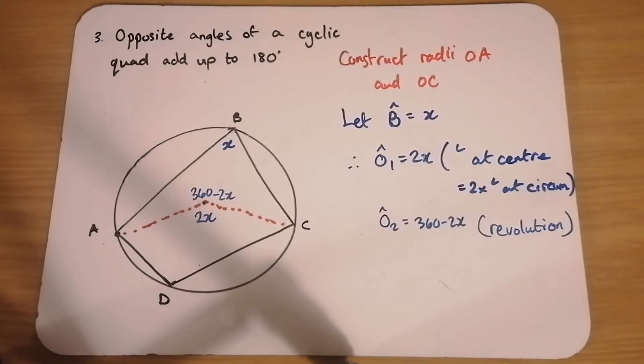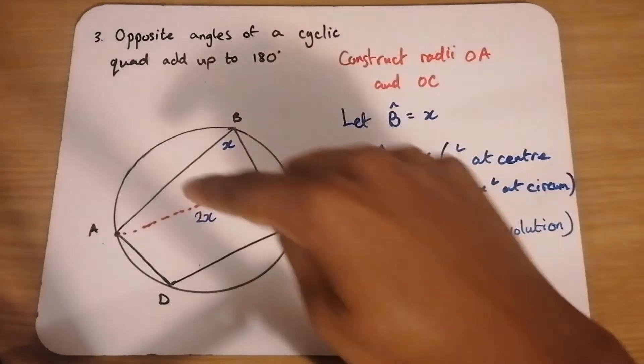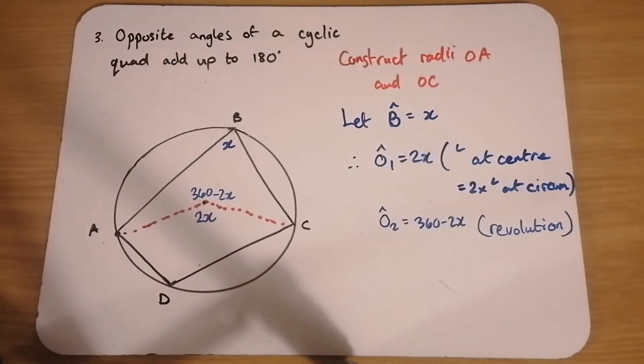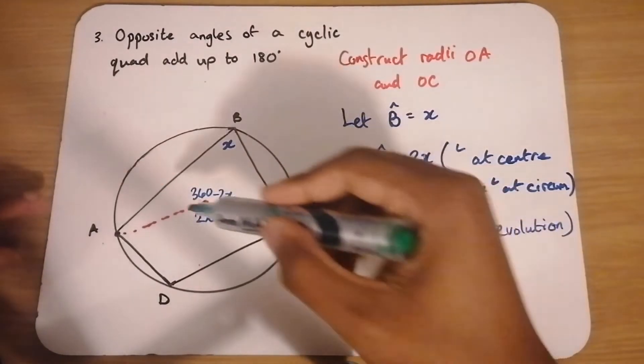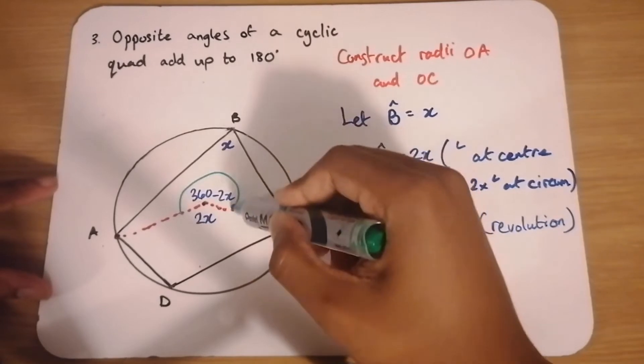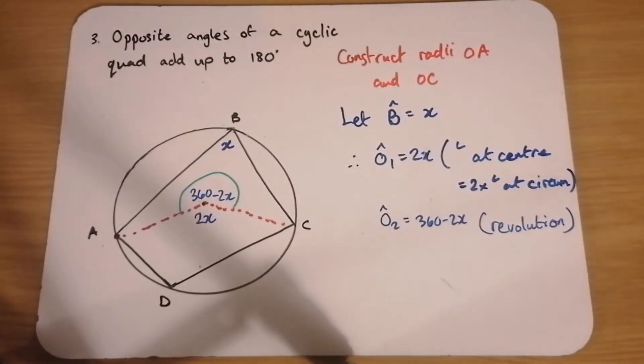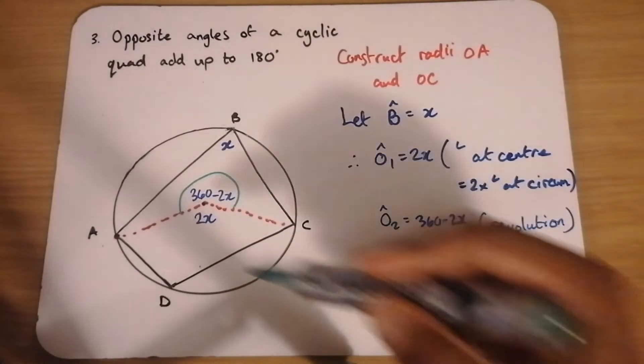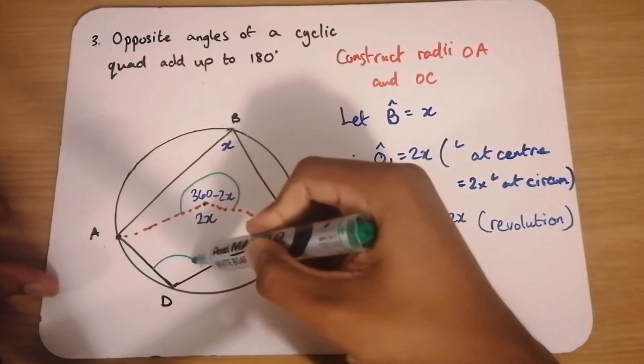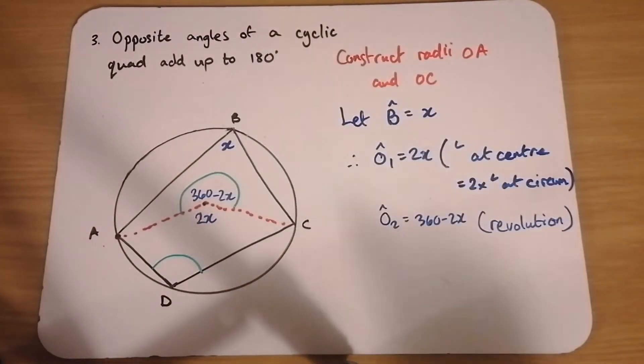Now, if angle O2 is equal to 360 minus 2X, we can use the same theorem that we used previously where we said angle at the center. This time we're talking about angle O2. Angle at the center is 2 times the angle at the circumference. And this time we're talking about, instead of angle B, we're talking about angle D.